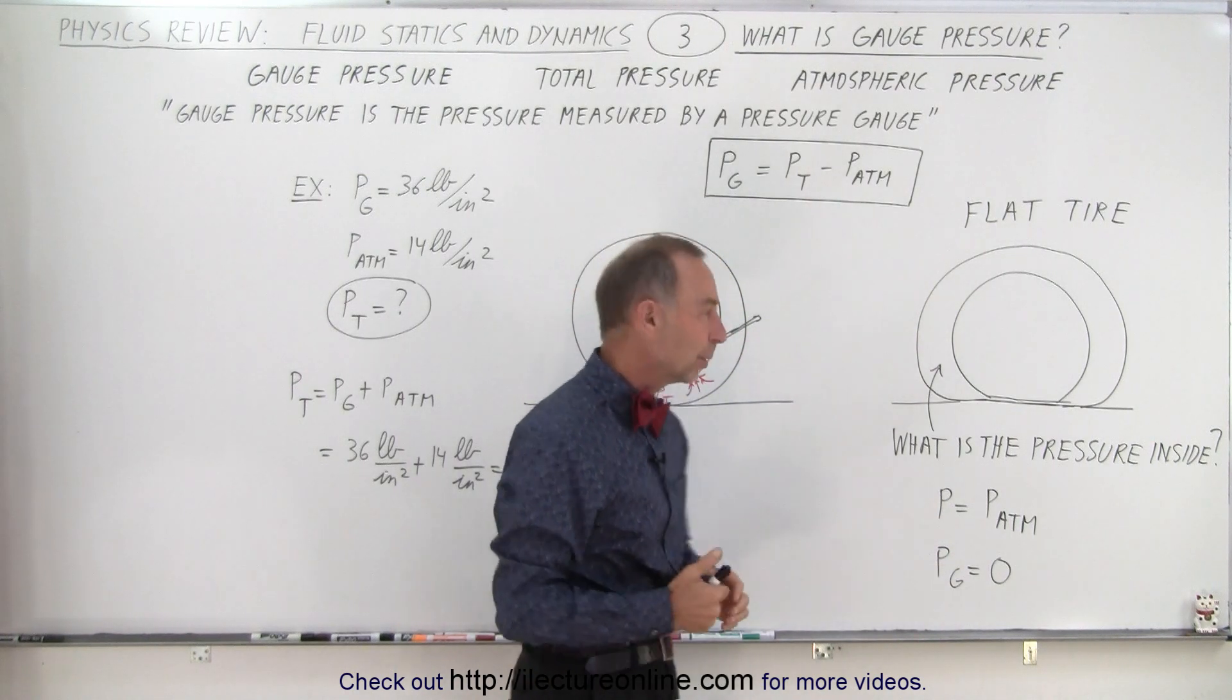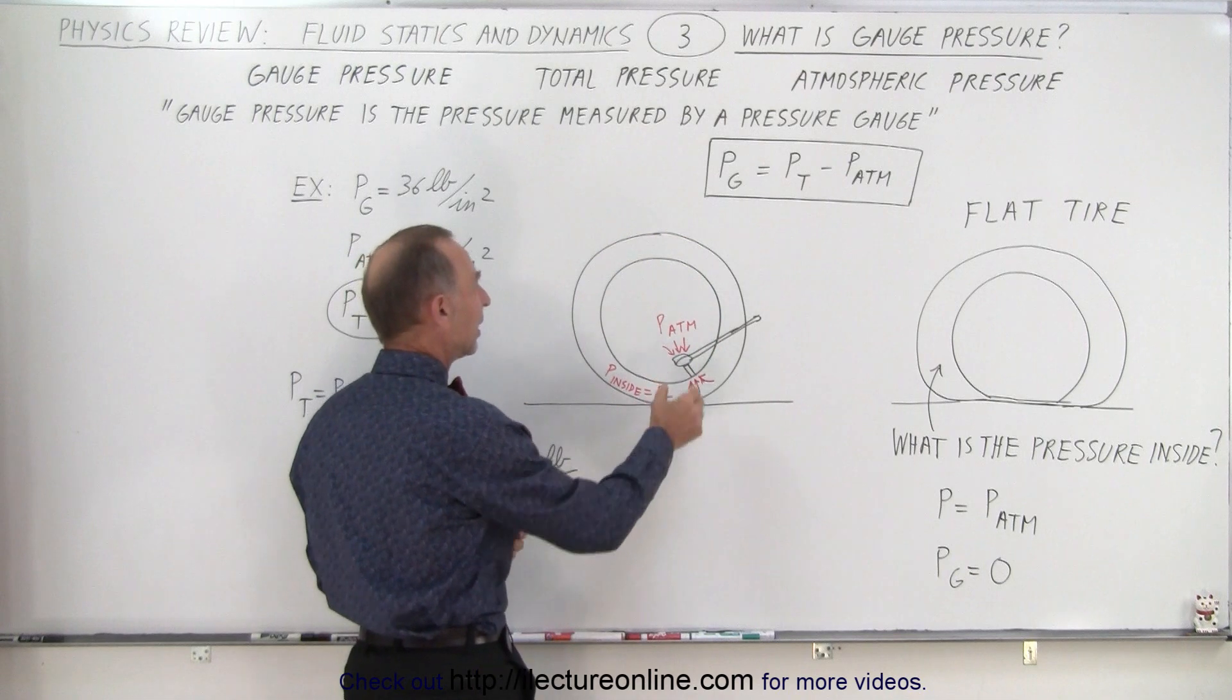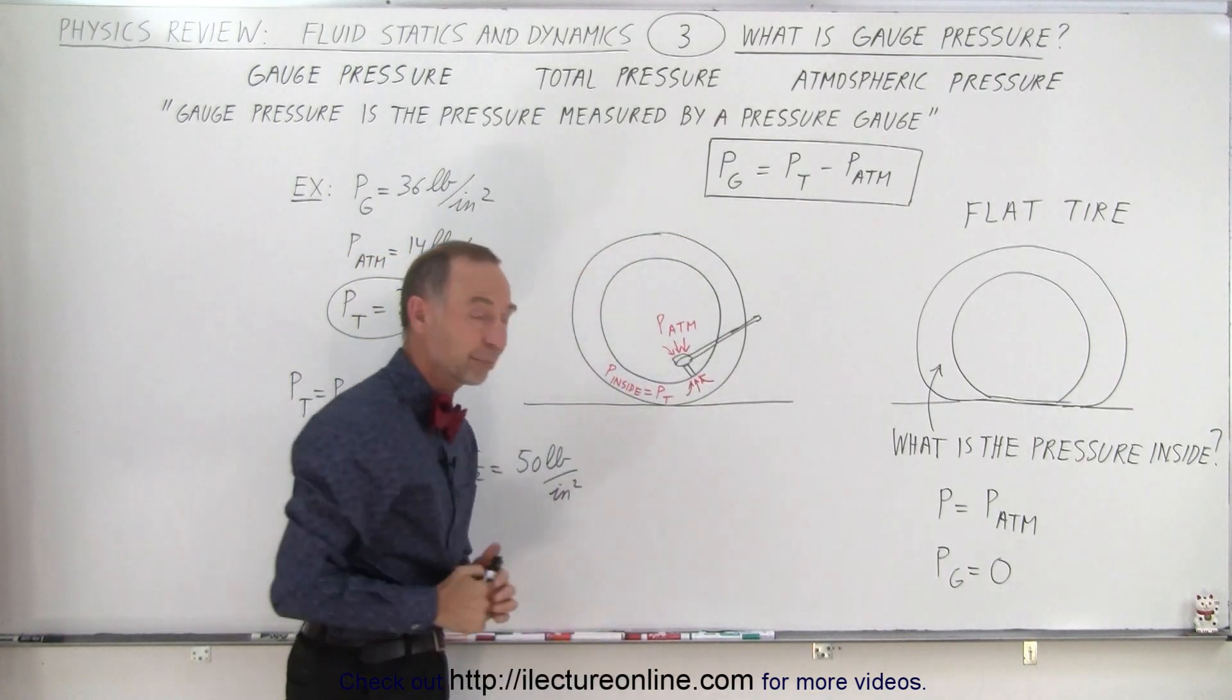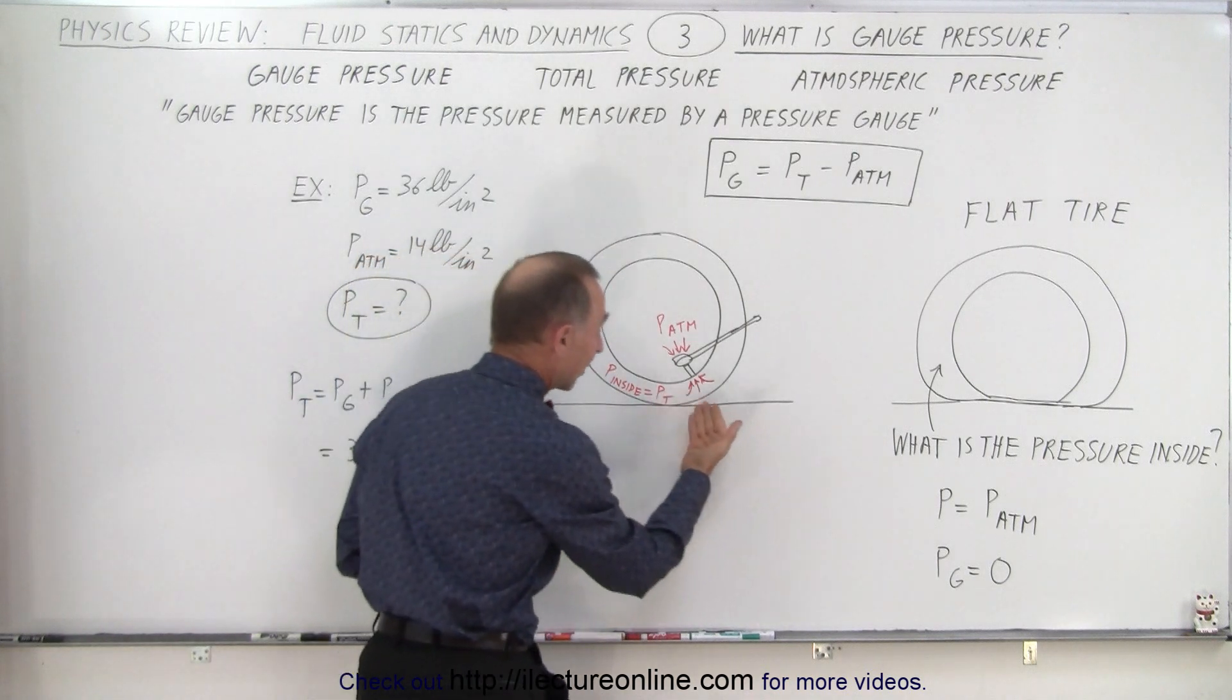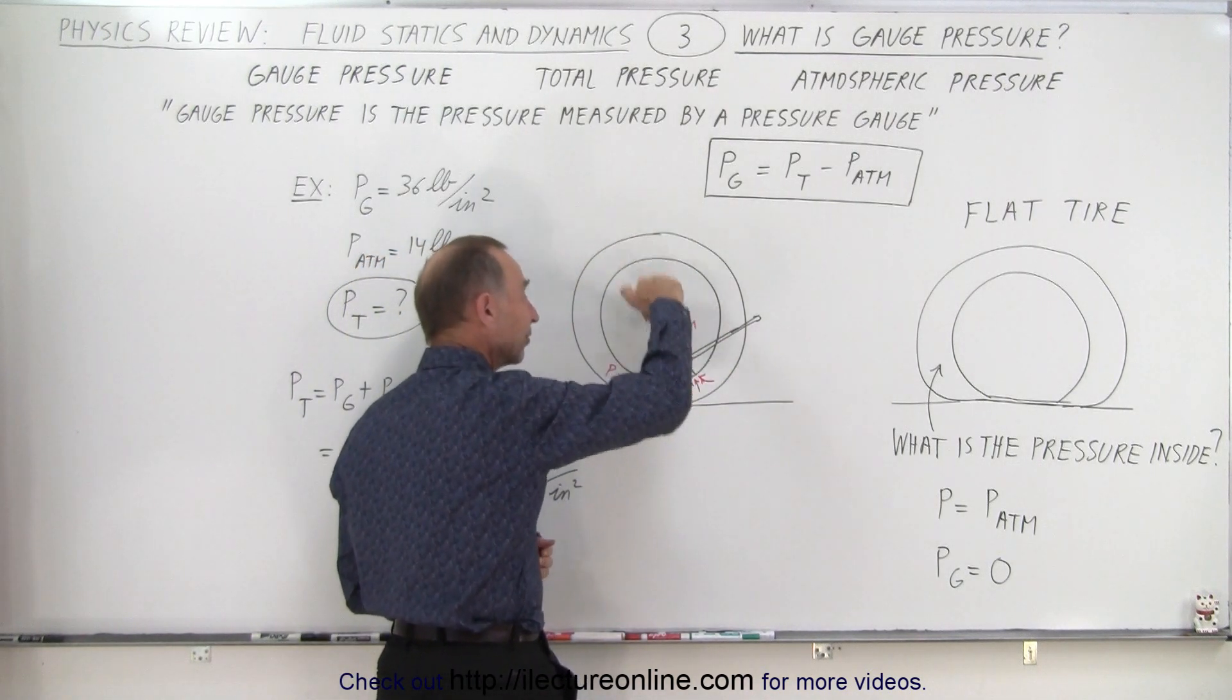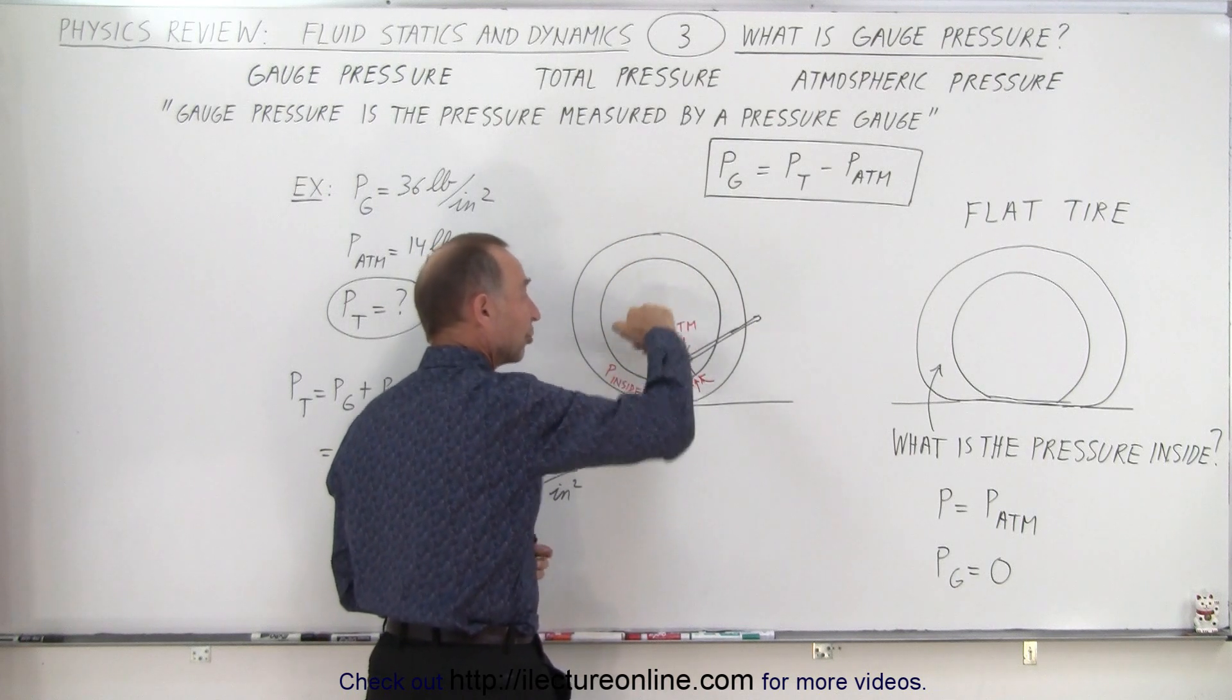So what is gauge pressure? Well let's say you don't have a flat tire and you measure the pressure of the air inside the tire. On one side of the tire you have the pressure inside the tire pushing against the gauge, but on the other side of the gauge you have the atmospheric pressure pushing back.